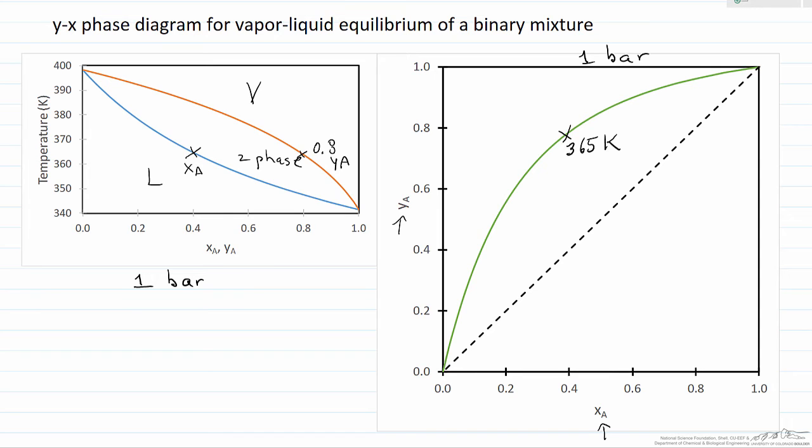If I read a different value, 0.6 in equilibrium with 0.9, that's a value somewhere around here, and that corresponds to a different temperature, 355 kelvin.